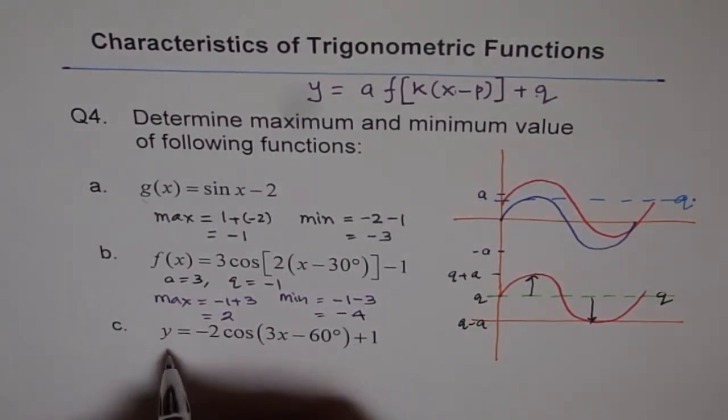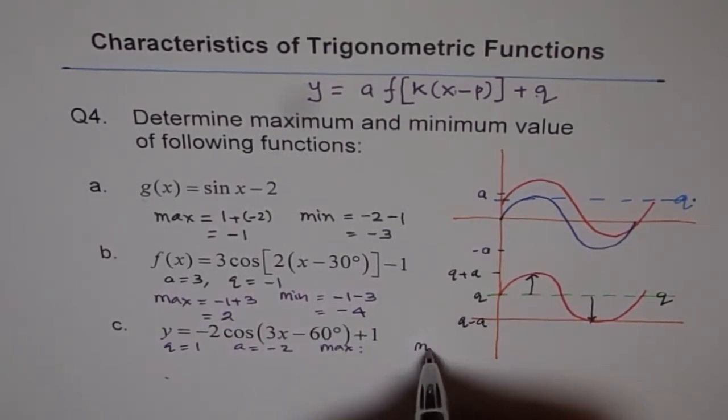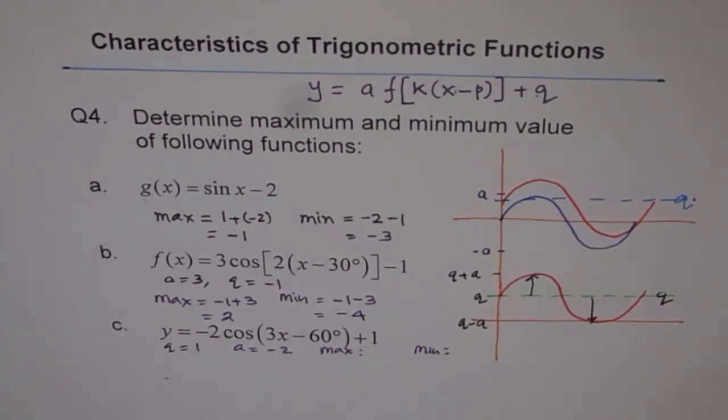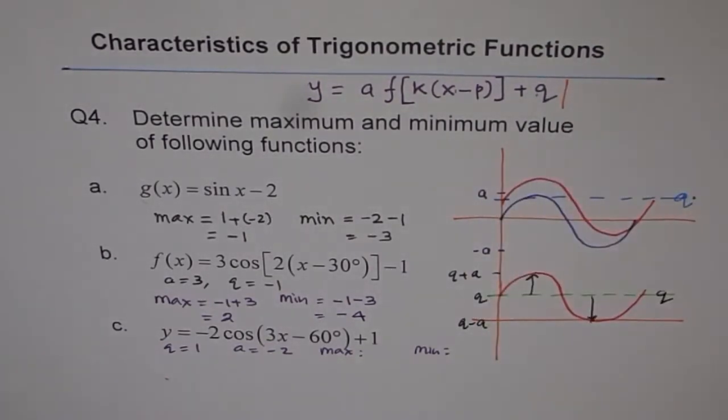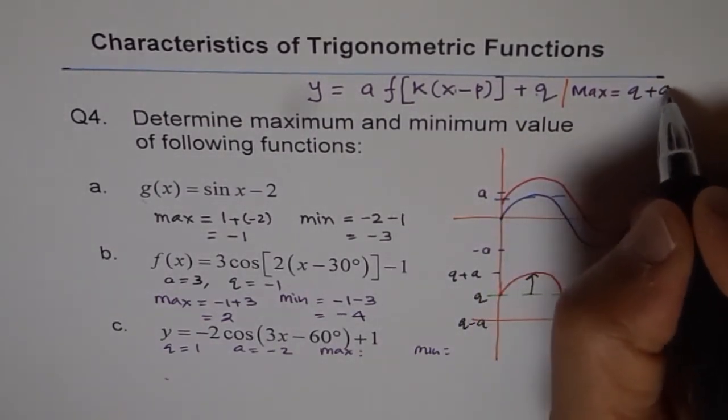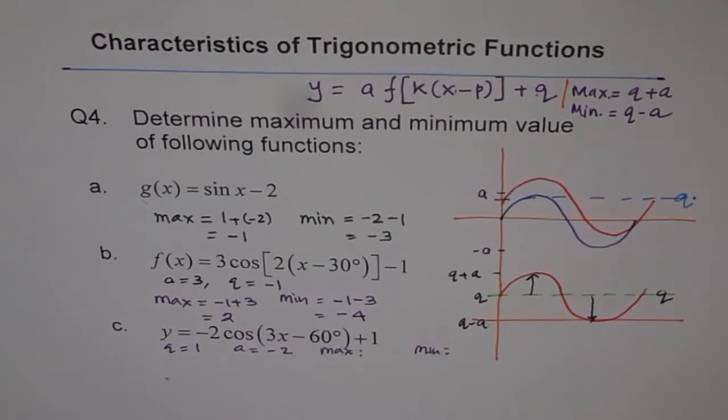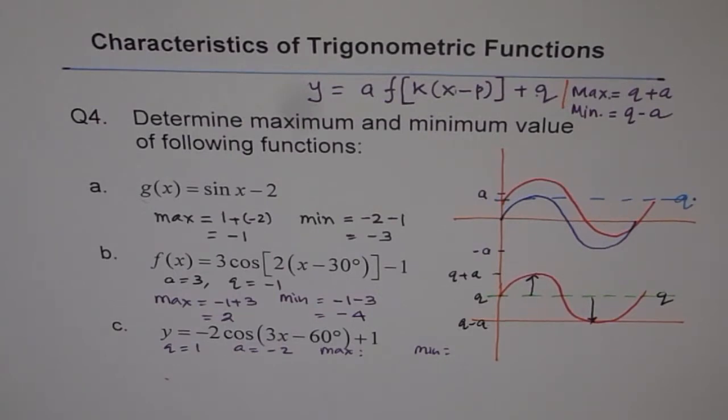Now here, we'll write q first. q equals 1, a equals minus 2. Maximum will be, you do it. And minimum will be, you do it. That is how we get maximum and minimum value for a function. If that is the general formula, then we can write down what should be the maximum or minimum value. So we can say maximum equals q plus a and minimum equals q minus a. In general, maximum minimum is just addition of vertical stretch and vertical translation, and minimum is the difference between vertical translation and vertical stretch.